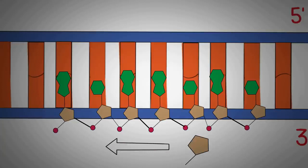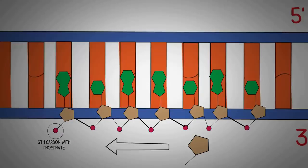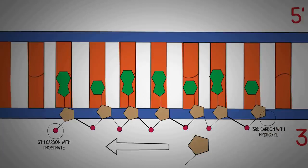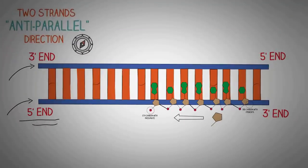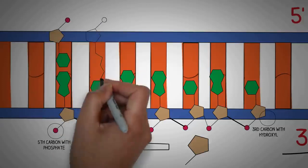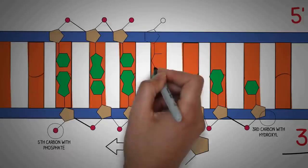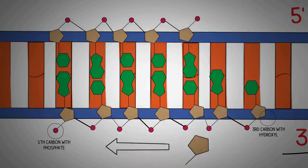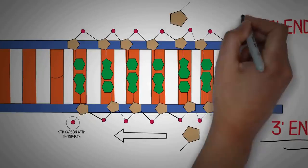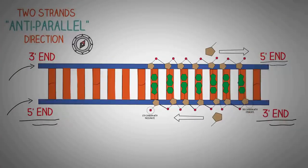Due to this orientation, the 5th carbon — to which the phosphate groups are attached — is always on one side, and the 3rd carbon — to which the hydroxyl group is attached — is always on the other side. This defines the 5' end and the 3' end of a DNA strand. The second strand runs in the completely opposite direction, as shown by the orientation of its sugar molecules, and this defines its own 3' and 5' ends.